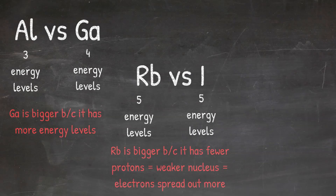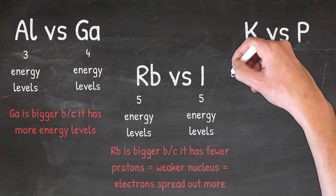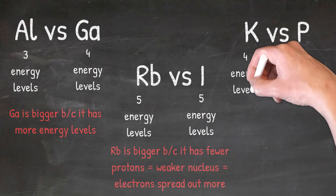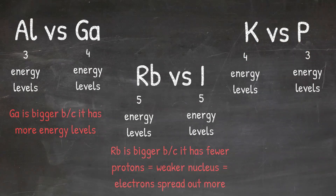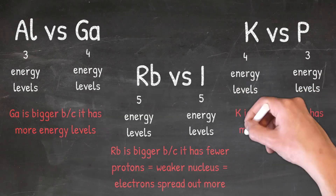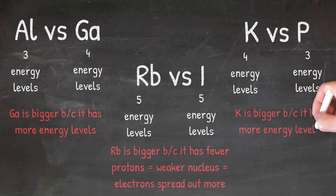In our last example, we can compare potassium to phosphorus. Looking at the number of energy levels should be the first thing you consider. Potassium has four energy levels, while phosphorus only has three. This means that potassium is going to be bigger because it has more energy levels than phosphorus.